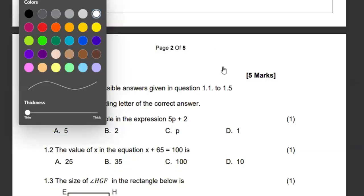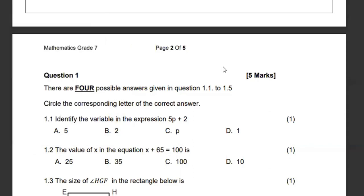We see that we have options telling us identify the variable within this expression. The variable we know is basically the letter, any letter of the alphabet for as long as it is within an expression that will be called a variable. In this case we have p is the variable and then 2 that doesn't have a letter will always be called a constant and then 5 will represent what we call the coefficient, the number that appears before a letter.